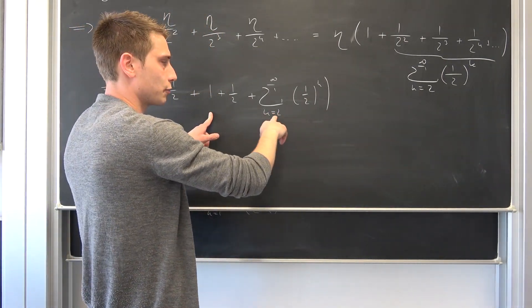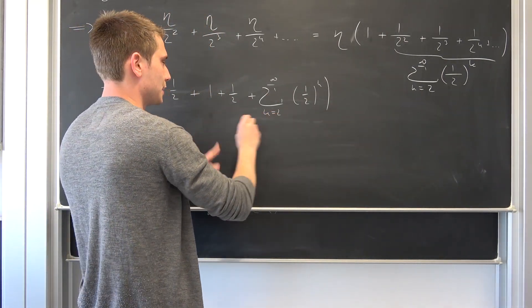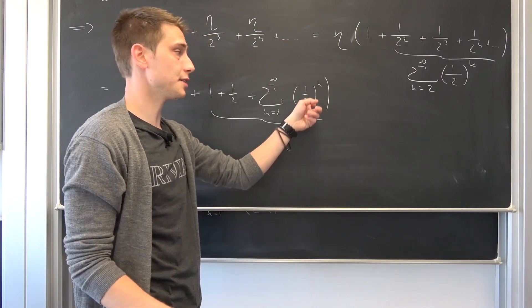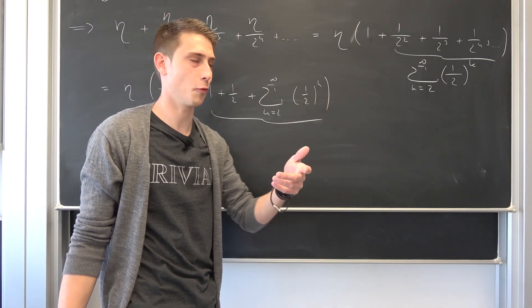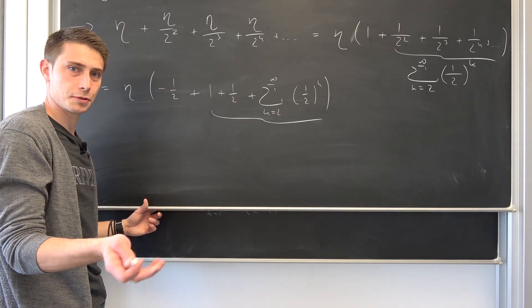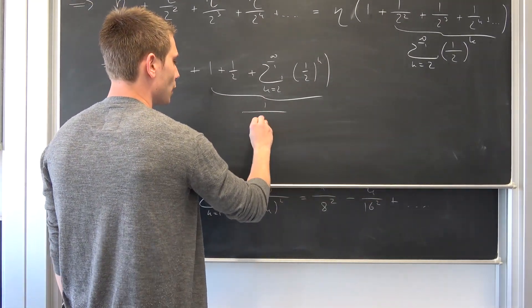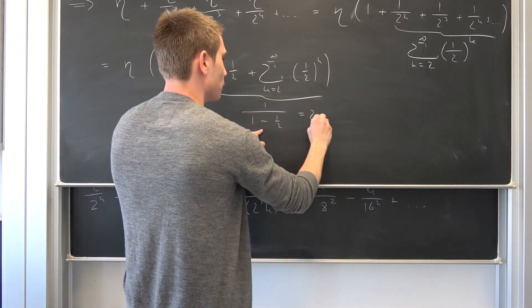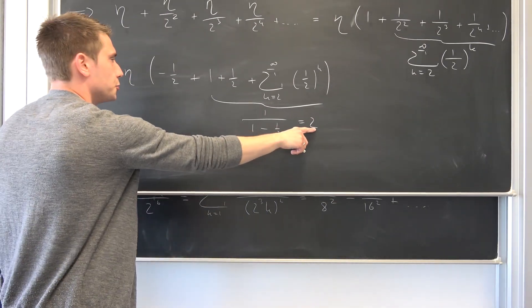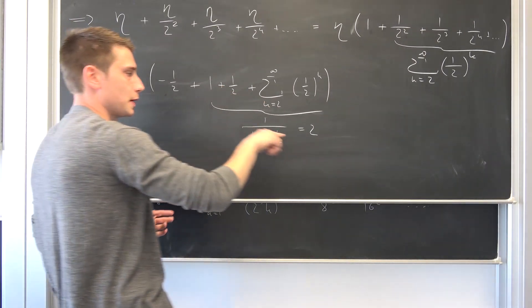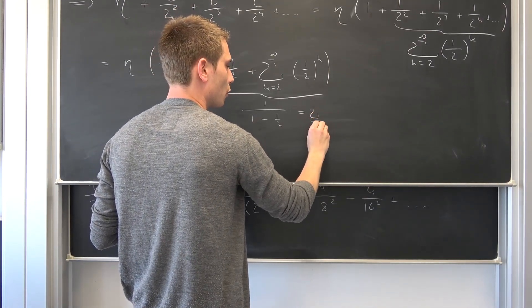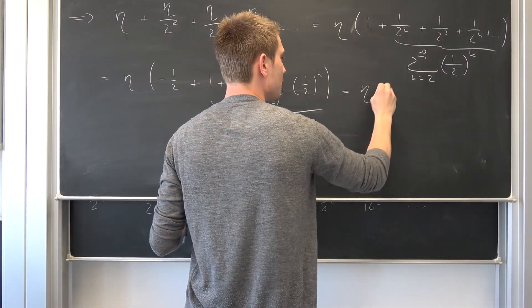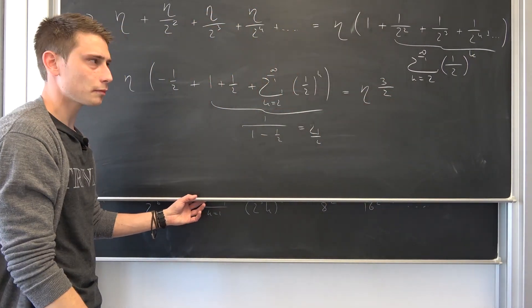Overall, this sum is now going to start from zero if we include those into here. And we know if our x value, 1 half in this case, is strictly less than 1, it is, it's 1 half, it's just 1 half of 1, then we can make use of the formula for the geometric series, turning this into 1 over 1 minus 1 half. 1 minus 1 half is nothing but 1 half. Taking the reciprocal leaves us with 2. Now we have 2 minus 1 half. We can expand this by 2 over 2 giving us 4 over 2, giving us 3 over 2. Overall, this is eta times 3 over 2.